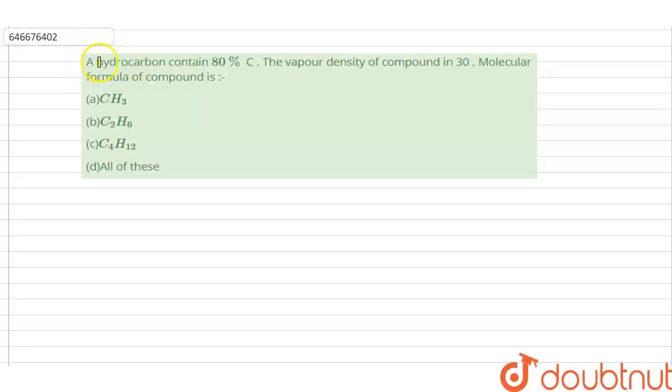The given question: A hydrocarbon contains 80% carbon. The vapor density of the compound is 30. We have to calculate the molecular formula of the compound. First of all, we should know that molecular mass...